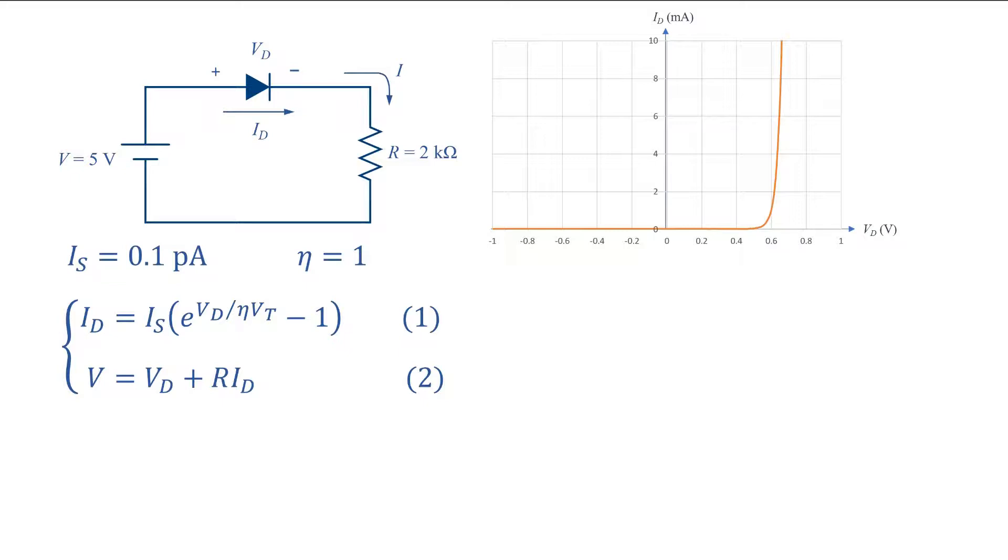As the initial guess, we can choose id or vd and we can use any value we want. However, we can reach the final value quicker if we have a reasonable guess.